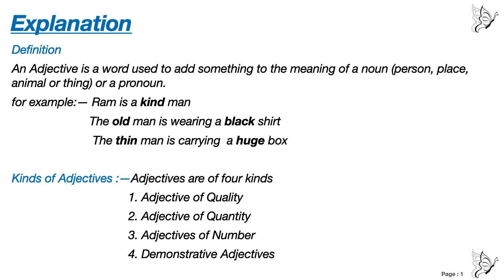Next: kinds of adjectives. How many kinds of adjectives are there? There are four kinds of adjectives. Number one: adjective of quality. Number two: adjective of quantity. Number three: adjective of number. And number four: demonstrative adjectives.